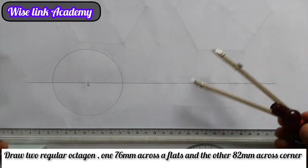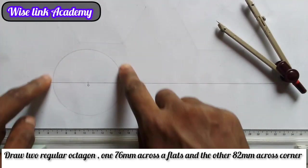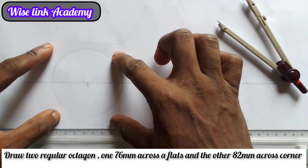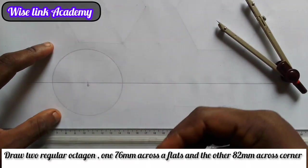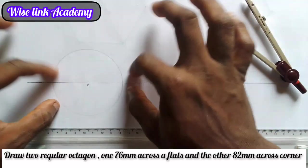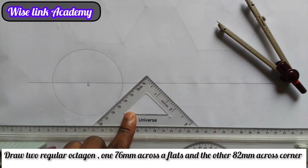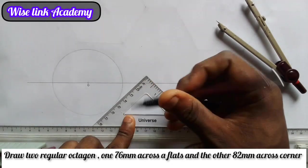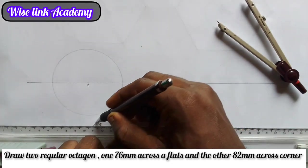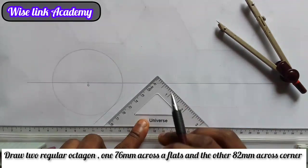Now my next task is to draw across flat. The octagon, the 8 sides will be outside the circle. I need my 45-degree set square this way. I'll take it this way, make sure it's tangential to the circle. Take it like this, one.